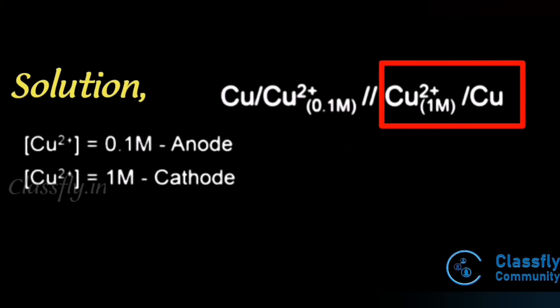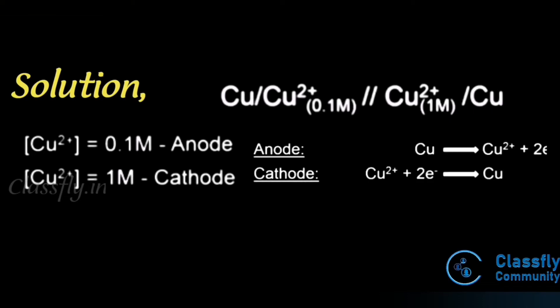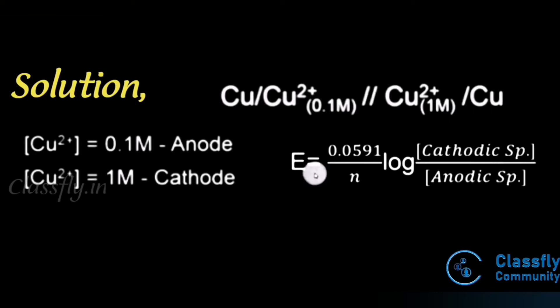At the anode, Cu → Cu²⁺ + 2e⁻ (oxidation). At the cathode, Cu²⁺ + 2e⁻ → Cu (reduction). We apply the formula: E_cell = (0.0591 / n) × log([cathodic species] / [anodic species]).